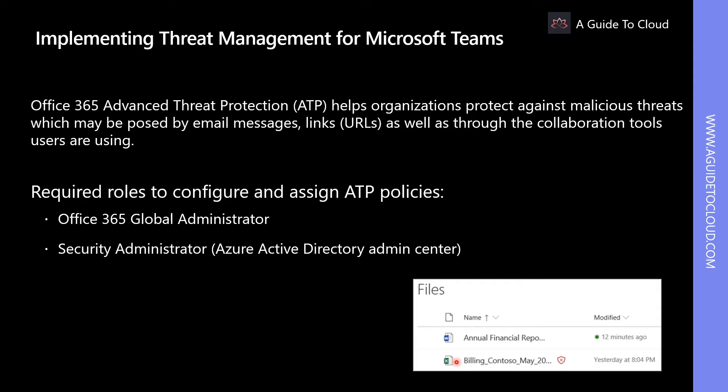Office 365 Advanced Threat Protection provides the users within your company with a safe environment for collaboration and communication, and helps malicious files to be detected and blocked in Teams sites and document libraries. If a document stored in Microsoft Teams, SharePoint Online, or OneDrive for Business is identified as malicious, ATP directly works with the file stores to lock that file.